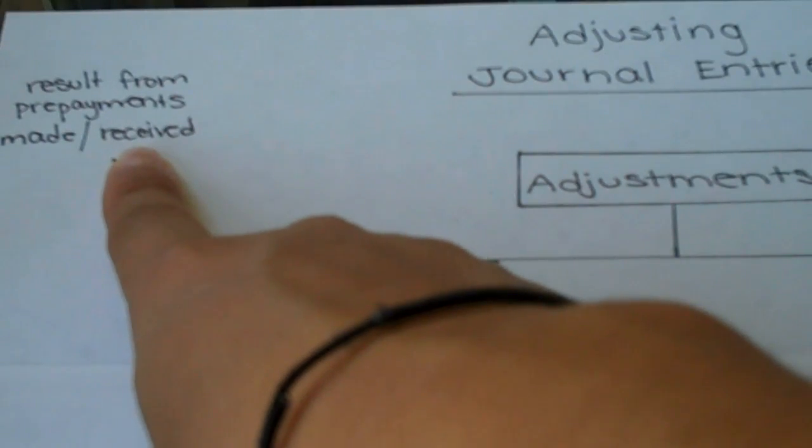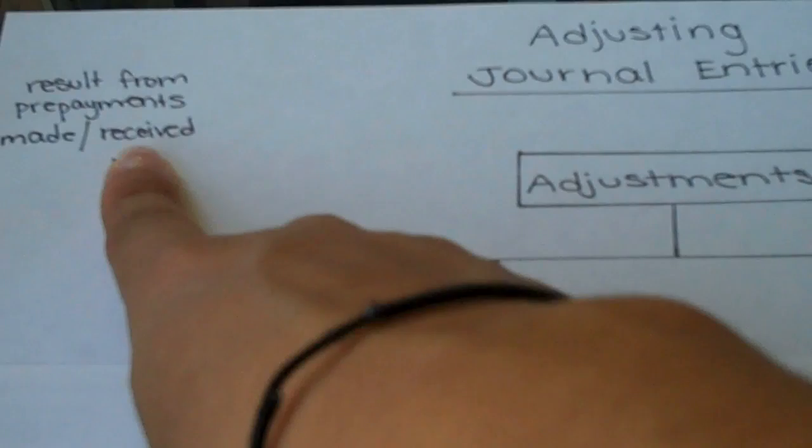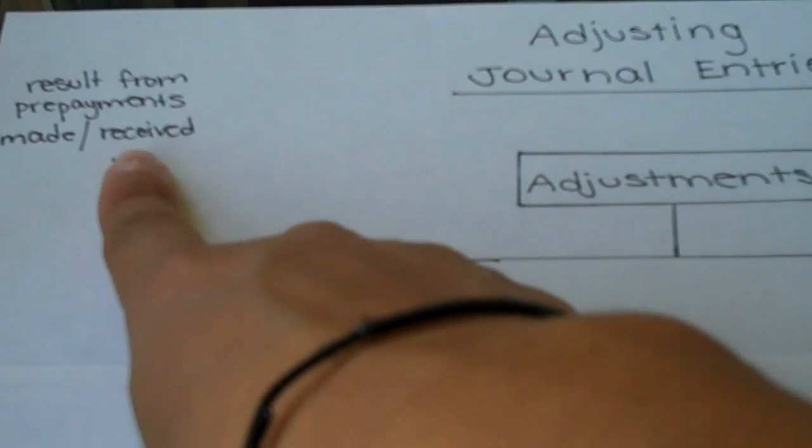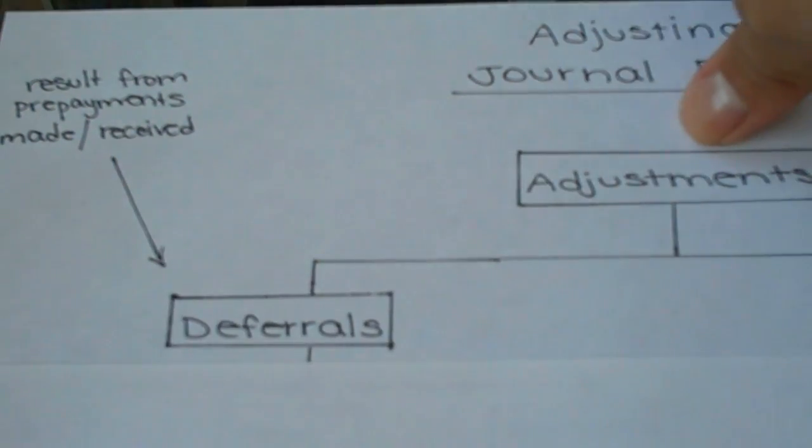So for example, when a customer pays in advance of the company performing a service. So if you're a lawn care company and a customer says, you know what, I'm going to prepay for the next two months of you cutting my lawn. That would be an example of a prepayment the company has received.